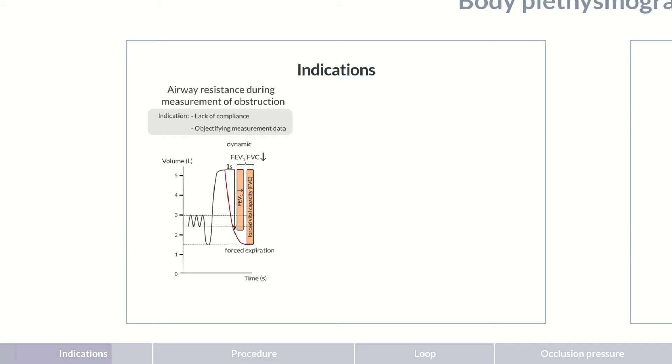Another reason to perform body plethysmography could be the differentiation between restriction and emphysema, that is, chronic lung hyperinflation. Spirometry provides only a clue, namely, a reduced vital capacity.